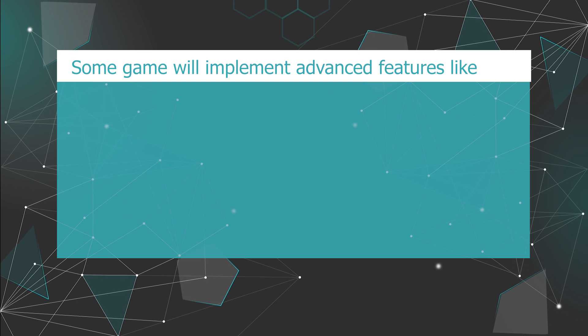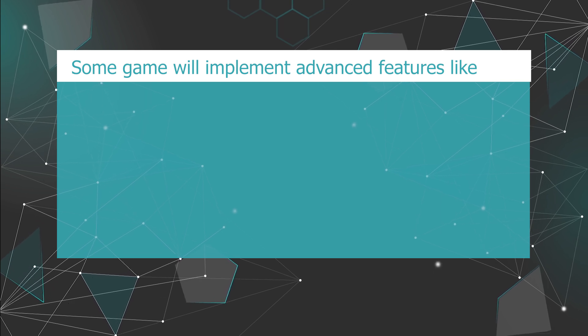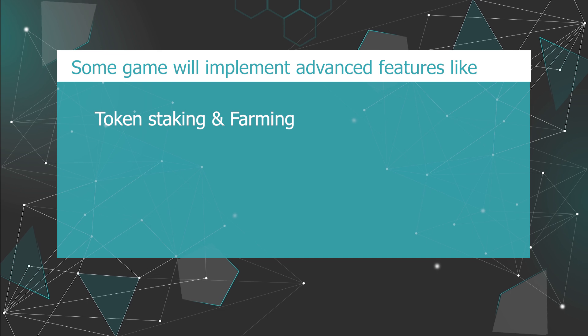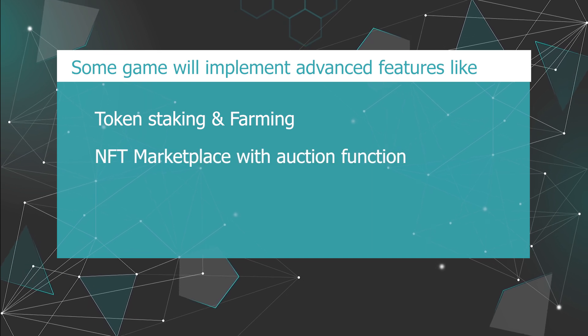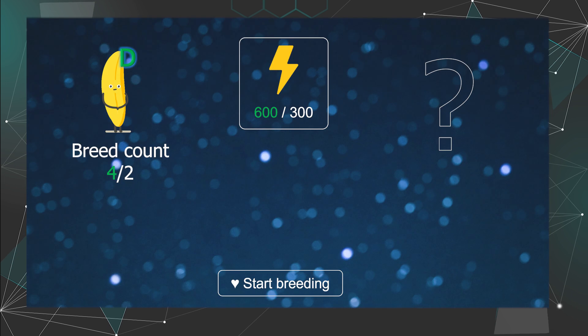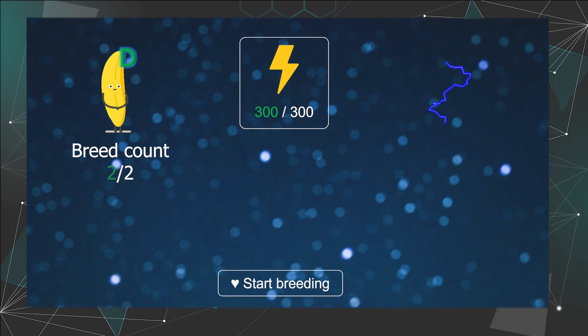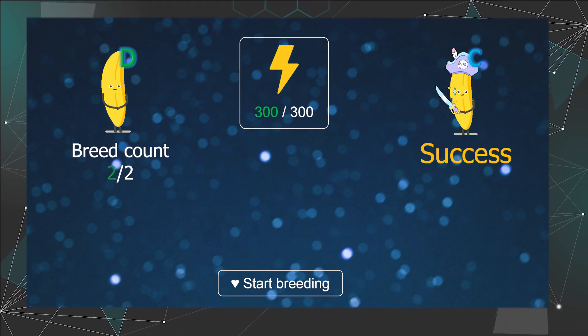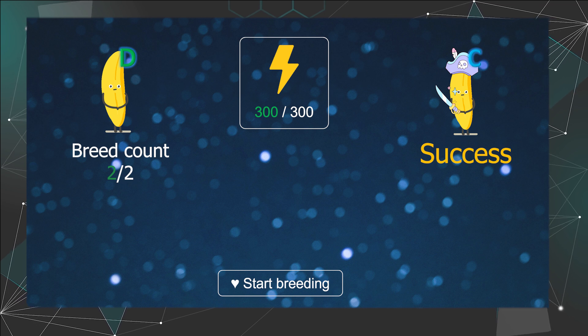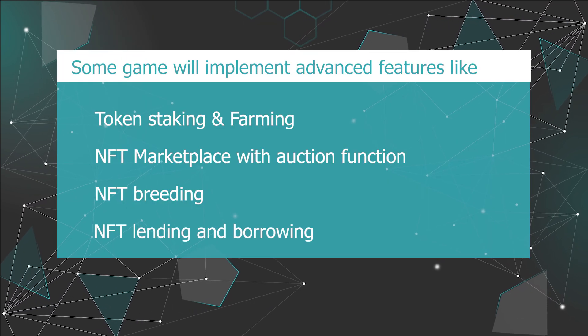That is not all for GameFi. Some games will implement advanced features like token staking and farming, NFT marketplace with auction function, NFT breeding where you can use two or more NFTs to create a more powerful NFT — but if you fail, you lose your NFTs — and NFT lending and borrowing. If you're ready to build your own GameFi, please join me in my live training session where I can explain every aspect of GameFi. You can register via the link in the description below.